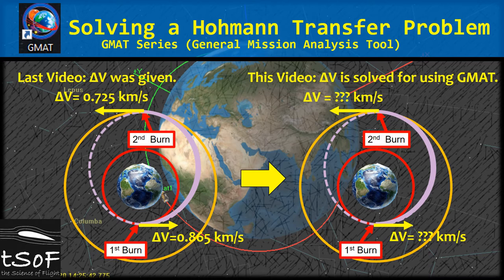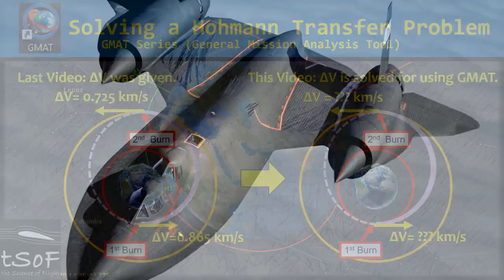In the last video, we did a Hohmann transfer problem where we went from a circular orbit about Earth to a larger circular orbit about Earth. In the last video, I had already pre-calculated the two ΔVs from the two burns and gave that to you. Now, in this video, we're also going to be going from a smaller circular orbit to a larger circular orbit using a Hohmann transfer, but we're actually going to solve for those ΔVs using GMAT. Let's get to it.